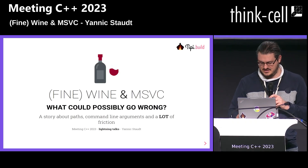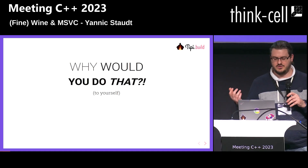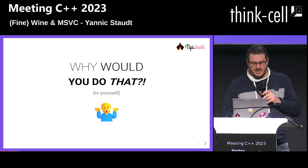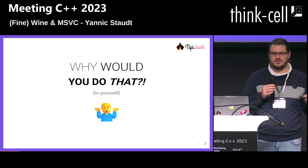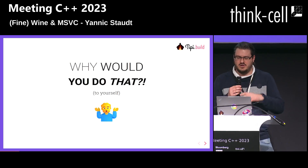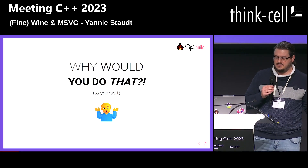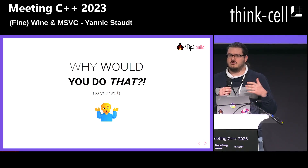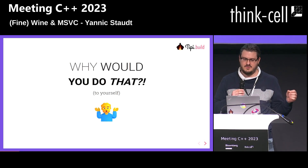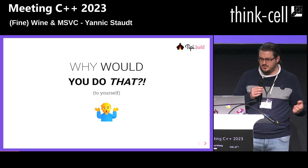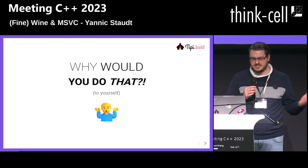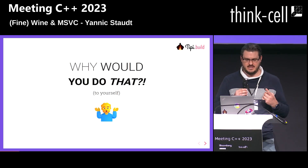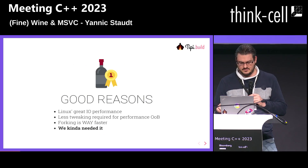The first question was: why would you do that to yourself? It turns out we had a customer with a very interesting requirement. We were experimenting with build distribution and they needed to build for Windows with MSVC. We couldn't cross-compile with any of the classic tools, and the build distribution technology we were using was Linux-only for the container side. So we said we can't really do it, but we have a dumb idea.